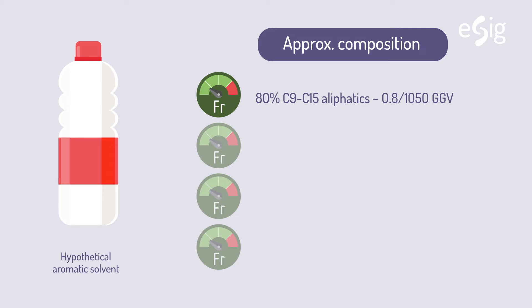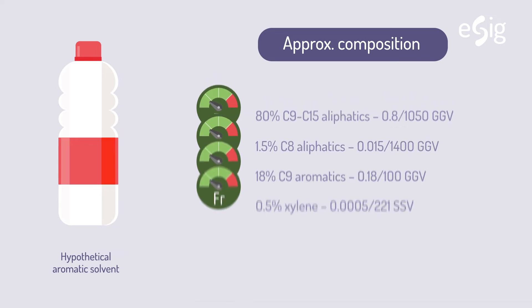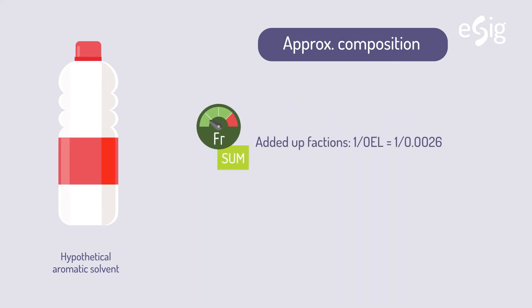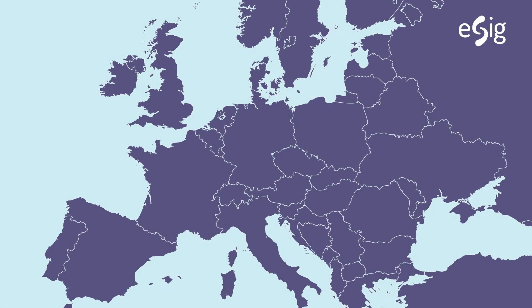For example, for a hypothetical aromatic solvent containing approximately 1.5% C8 aliphatics, 18% C9 aromatics, and 0.5% xylene, the added-up fraction gives 1 over OEL equals 1 over 0.0026, and the reciprocal is obtained, which can be rounded up to a final OEL of 400 mg per cubic meter.